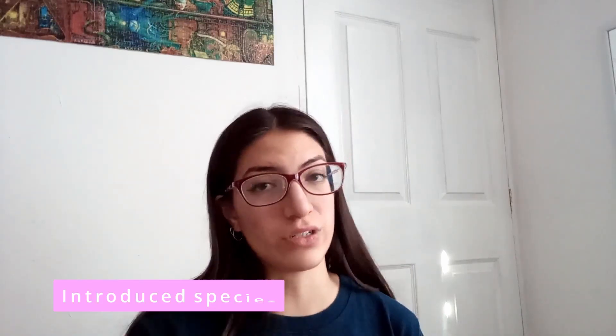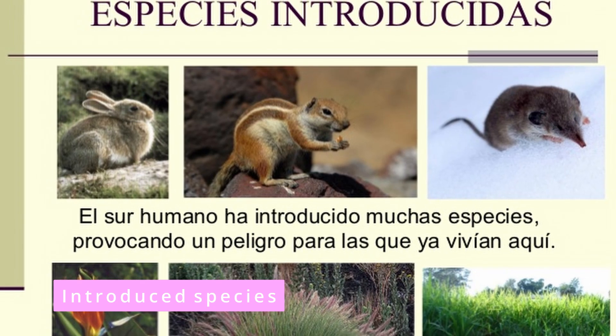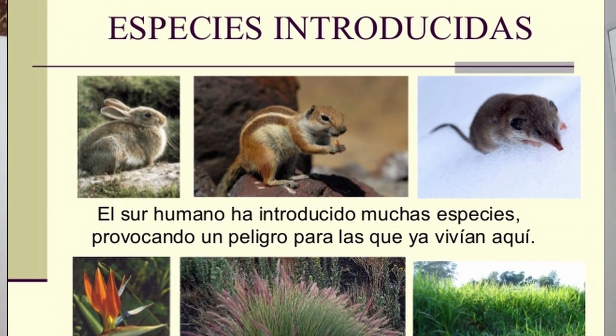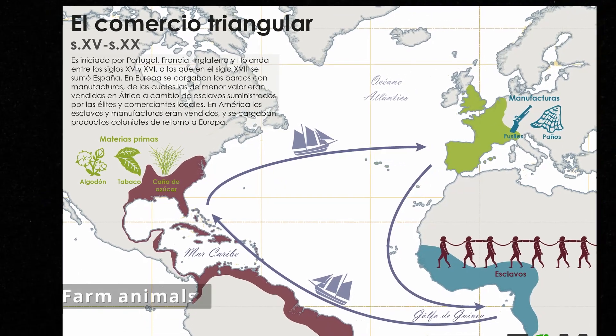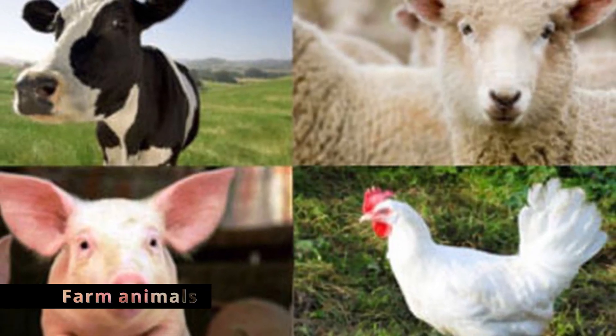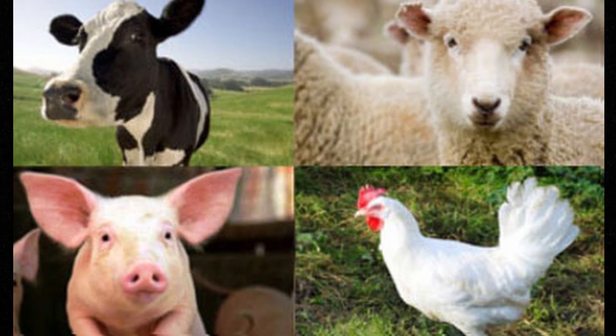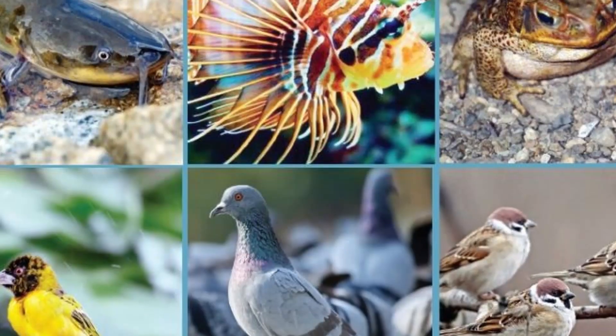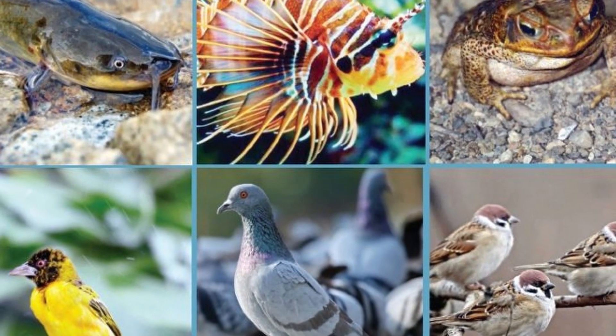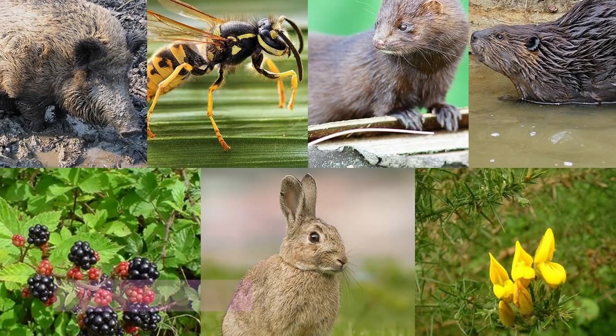The problem happens when humans interfere with these ecosystems and change a weak part of it, which takes me to the next two concepts. The first one: what an introduced species is. Introduced species are those placed by humans in a new ecosystem where they don't belong. Most of the exchange of species happened during colonialism. The Europeans brought animals to America and took plants like tomatoes and potatoes to Europe. These species can easily adapt to their new ecosystem. When introduced species reproduce out of control in the new ecosystem, they become invasive species.